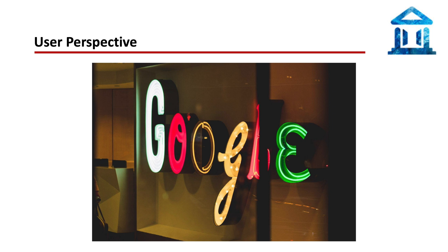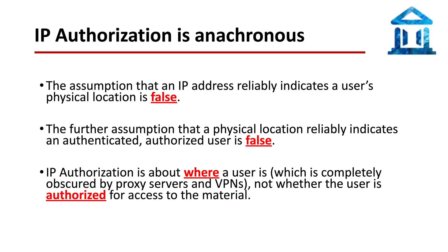A much better approach is to enable the user to follow links directly to vendor sites and be referred to their institution for authorization from there. In other words, the decision about whether or not authorization is required should be done at the point of need, not preemptively at the institution's portal. A previous slide mentioned that the IP authorization model contains some unspoken assumptions. The entire model is constructed on the assumption that an IP address reliably indicates a user's physical location — this is simply no longer true. What's worse, the model assumes a physical location can be relied on to identify a legitimate authorized user — this is utterly false. IP authorization is obsolete because it is concerned with where an anonymous user is instead of who the user is.